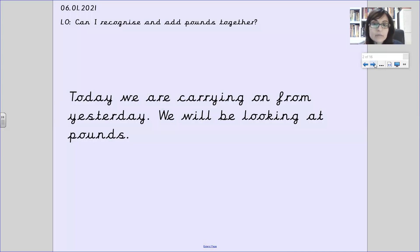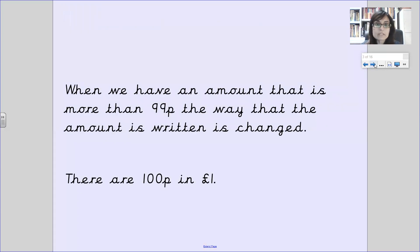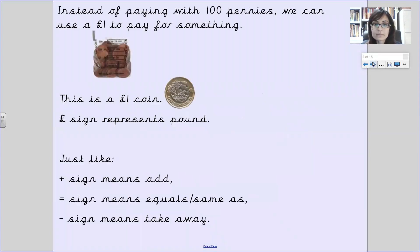Today we are going to carry on from yesterday. Today we are going to be looking at adding pounds together. So in this lesson, we are going to add pounds. When we have an amount that is more than 99p, the way the amount is written is changed. There are 100 pennies in a pound. Instead of paying with 100 pennies, we can use a one pound coin to pay for an item.